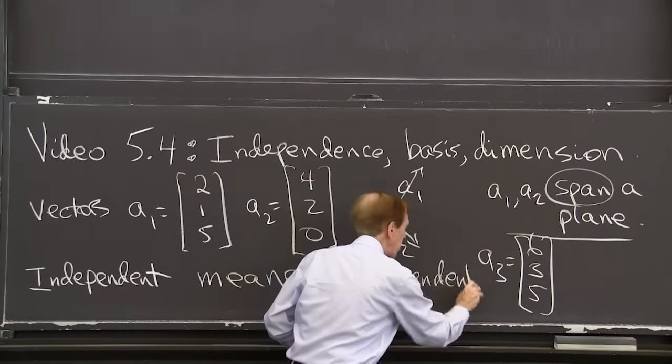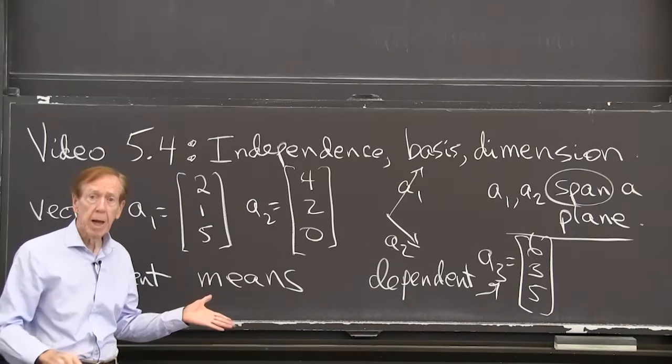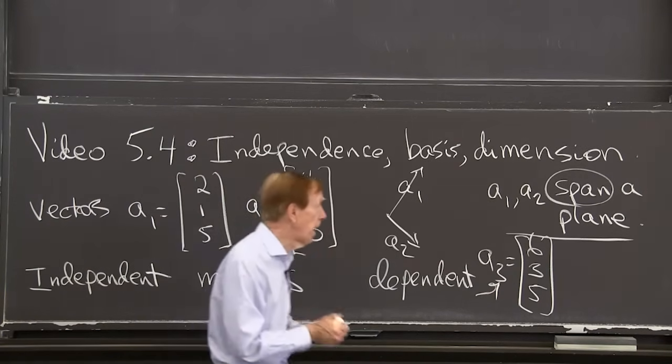The three vectors would be dependent with that a3. They would span the plane still. Their combinations would still give the plane. But they wouldn't be a basis for the plane.